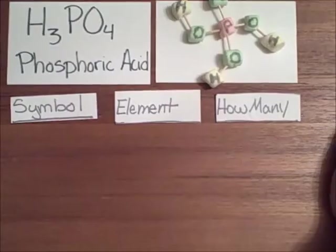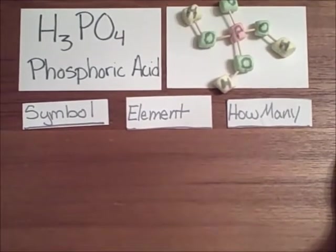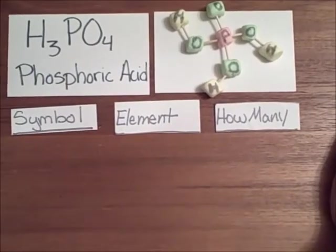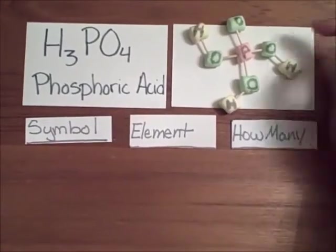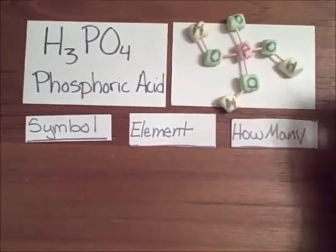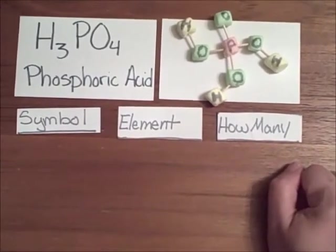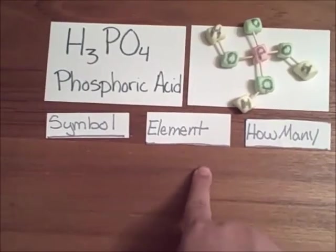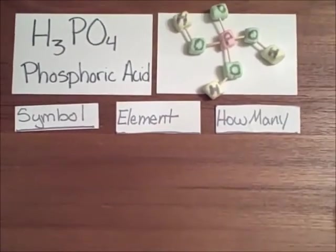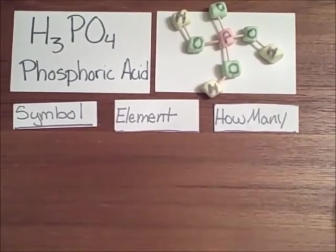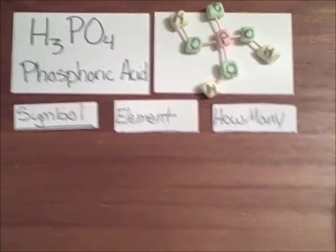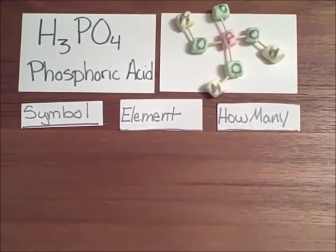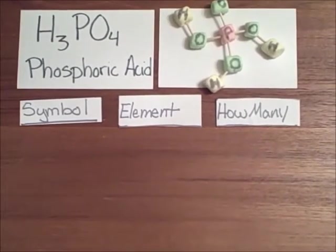I'm just going to leave this here. You can pause the video here, break it down into the symbol, element and how many of each atom you have. We're looking at phosphoric acid, which is H3PO4. You can find this acid in your soda drinks. And here's the model. You have phosphorus, your oxygens, and then your hydrogens. Go ahead and break this down into the different symbols, then tell me what they are using your periodic table, and then how many of each element you have.